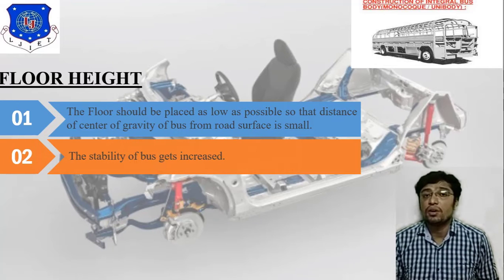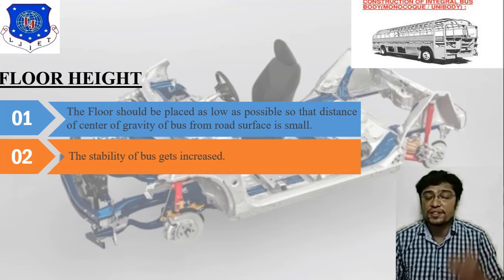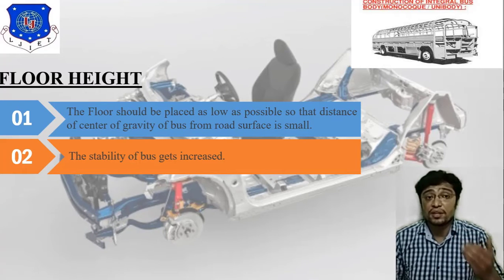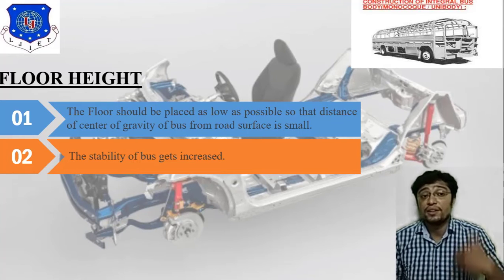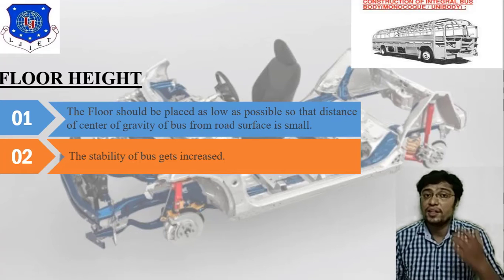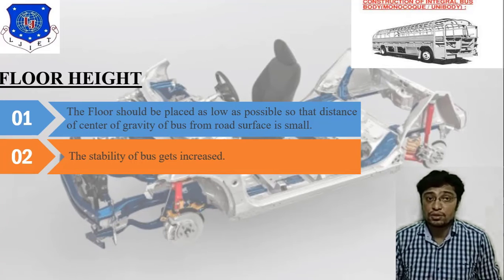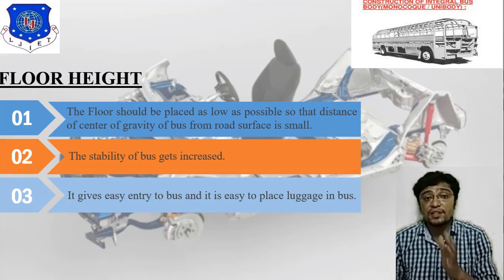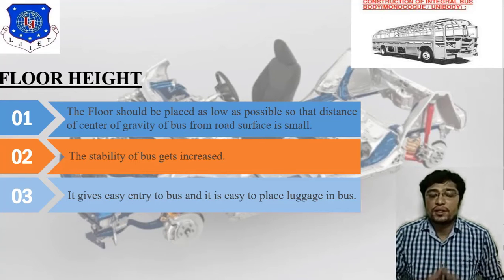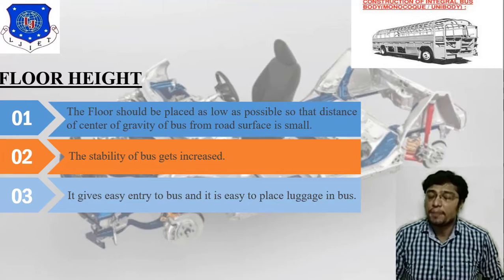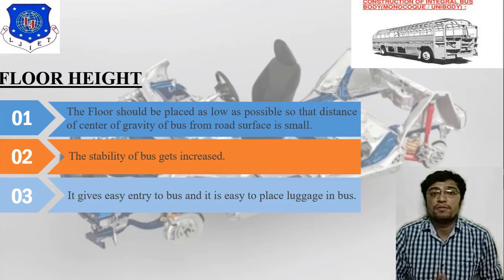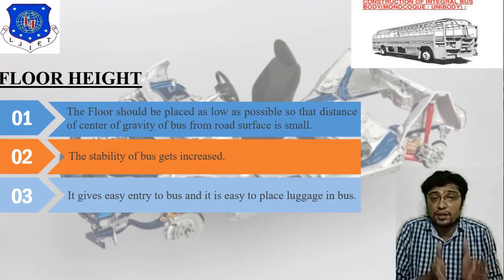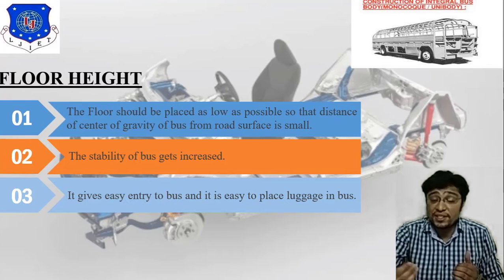Second point: the stability of the bus gets increased. As you can see in the image, if the floor height is low — meaning the distance of the center of gravity of the bus from the road surface is very small — then the stability of the bus gets increased and ultimately vehicle performance improves. Third point: it gives easy entry to the bus and it is easy to place luggage in the bus. The monocoque chassis includes a specific area for the driver's seat and the passenger seat area.